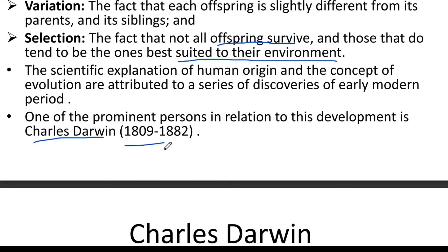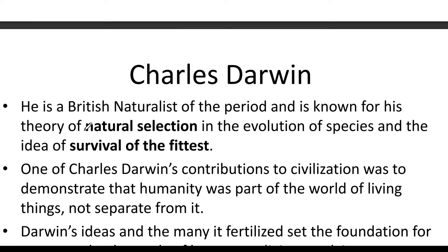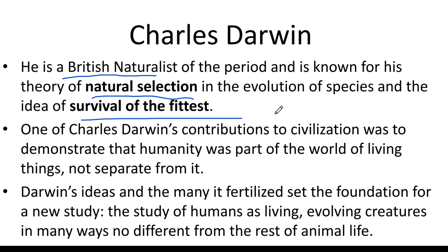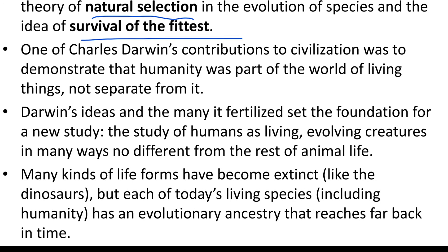The scientific explanation of human origin and the concept of evolution are attributed to discoveries of the early modern period. Charles Darwin, 1809 to 1882, was a famous British naturalist known for his theory of natural selection and the idea of survival of the fittest — that offspring that survive tend to be the ones best suited to the environment. One of Darwin's contributions to civilization was to demonstrate that humanity was part of the world of living things, not separate from it.